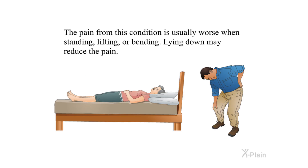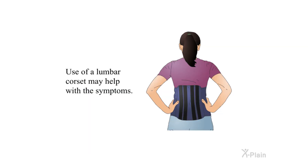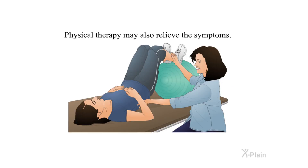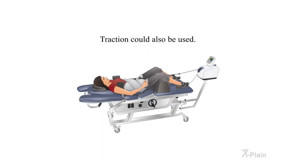Alternative treatments: The pain from this condition is usually worse when standing, lifting, or bending; lying down may reduce the pain. Use of a lumbar corset may help with the symptoms. Physical therapy may also relieve the symptoms. Traction could also be used.